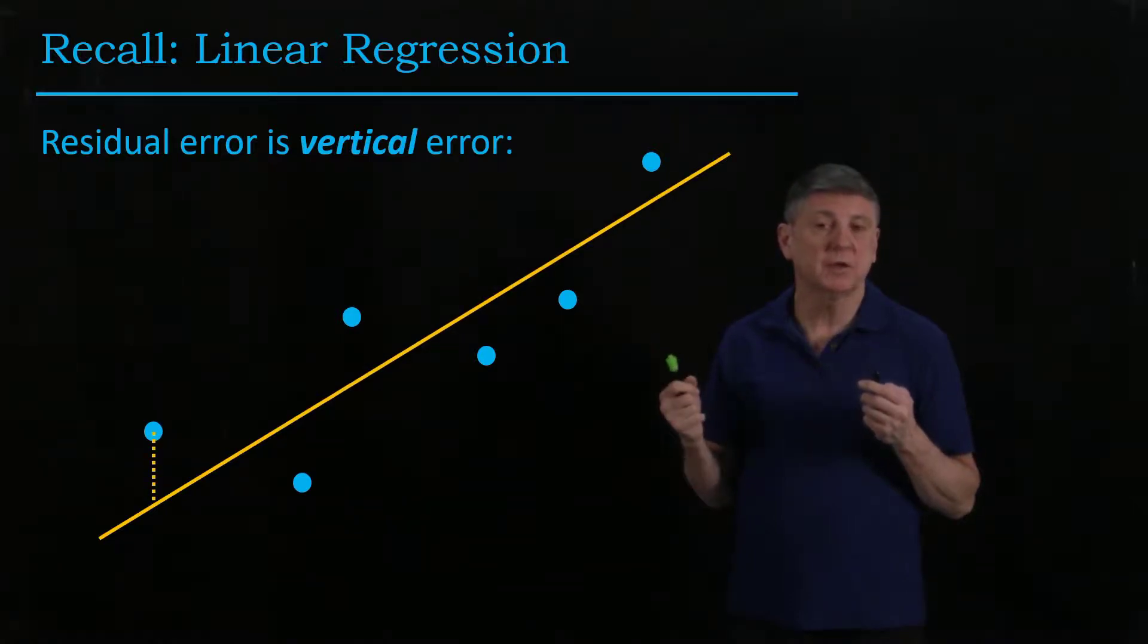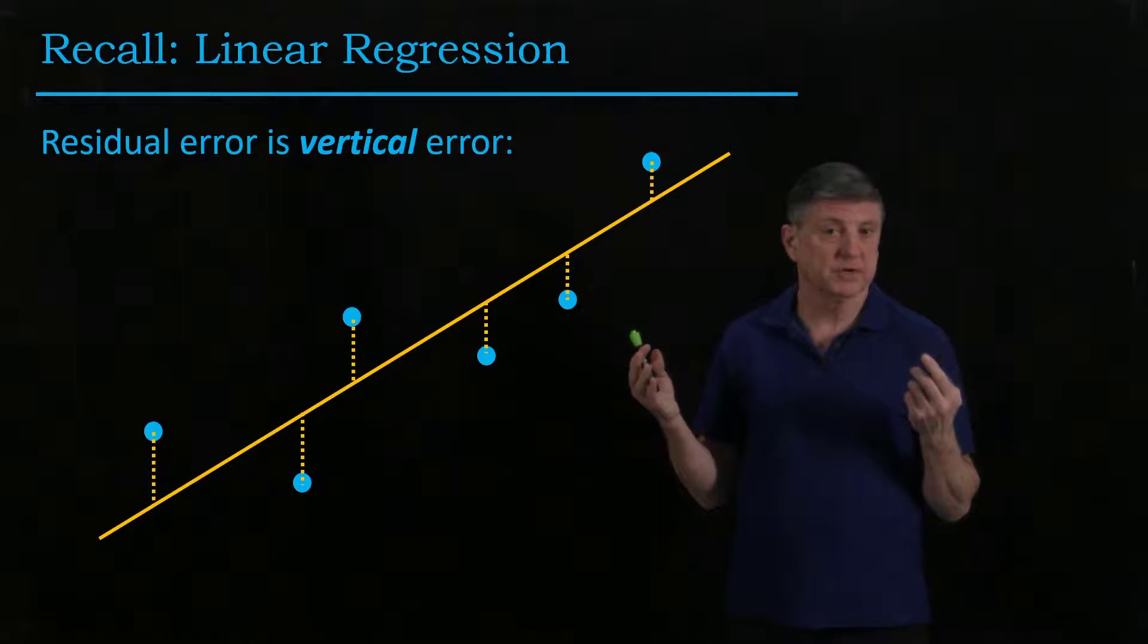we're calculating the vertical distance, and we're trying to minimize the sums of the squares of these vertical distances. That's how linear regression works.